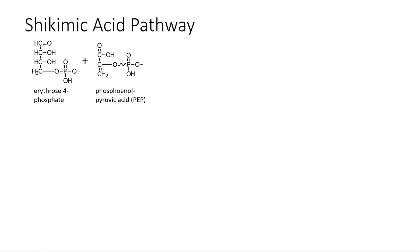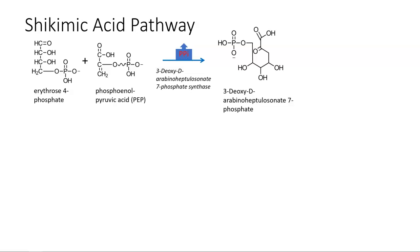The pathway begins with erythrose-4-phosphate from the pentose phosphate pathway and phosphoenolpyruvic acid PEP from glycolysis. These combine in the presence of the enzyme 3-deoxy-d-arabino-heptulosonate-7-phosphate synthase to form 3-deoxy-arabino-heptulosonate-7-phosphate. Pyrophosphate is released.